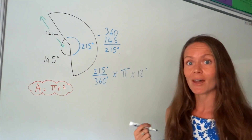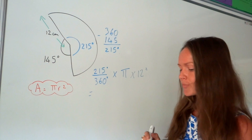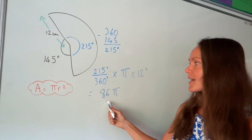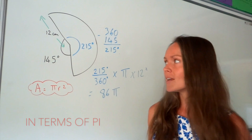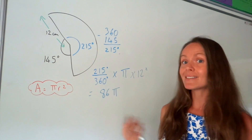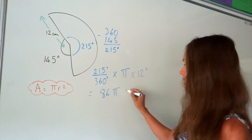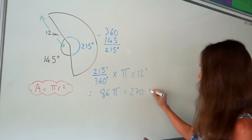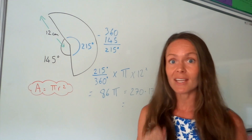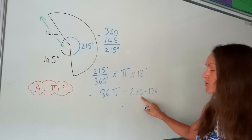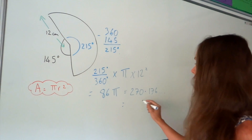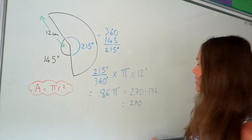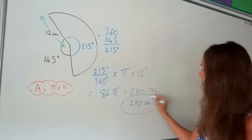That is the calculation to work out the area of the sector. When I put this in my calculator I get 86π, which is the answer in terms of pi, but the question doesn't ask for that. I'm rounding to three significant figures, so pressing the SD button gives me 270.176... Rounding to three significant figures: one, two, three — the one doesn't round the zero up, so I'm left with 270. Don't forget the units for area are always squared, so the answer is 270 cm².